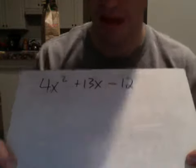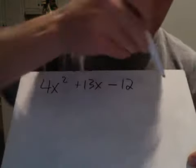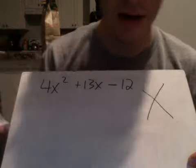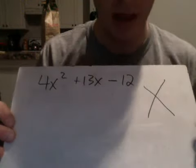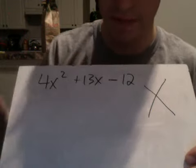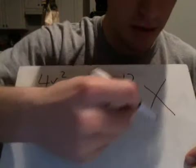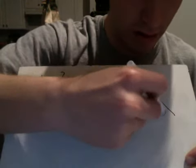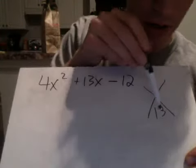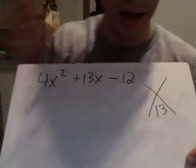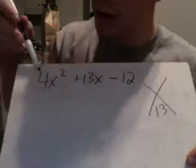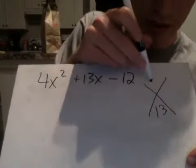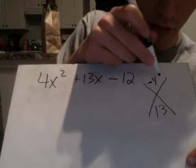One method of factoring trinomials is called the product sum method, where basically you kind of draw an x here, and you try to think of numbers that will add up to 13. Since 13 is the b value, I put it in the bottom. And then I'm trying to think of numbers that will multiply up to 4 times negative 12, which is negative 48.